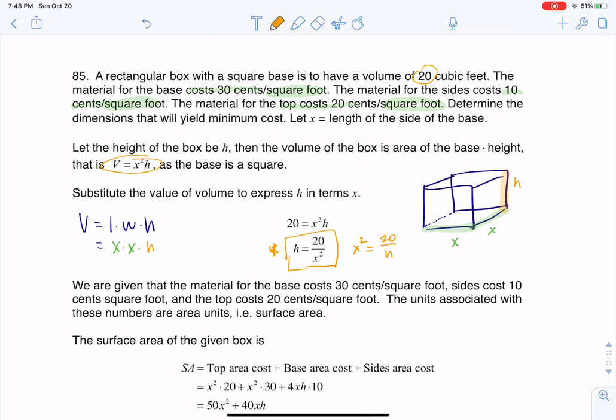Now if I want to get the formula for the surface area, I want us to think of the different surfaces here. So again, I'm going to color code this. There's the surface down here on the bottom, this base. The base that they told us costs 30 cents per square feet, so I'll keep that in mind.